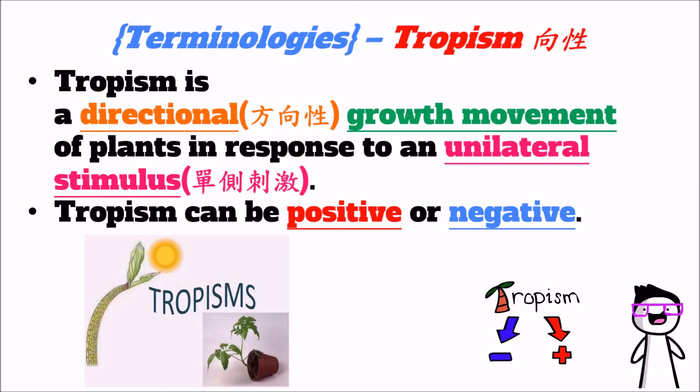The focus of this video is tropism. As I mentioned in the lesson, there are three elements in the definition of tropism. Firstly, tropism is directional. Secondly, tropism is a growth movement. Thirdly, tropism is in response to a unilateral stimulus. Tropism can be positive or negative. Positive tropism means the plant moves towards the unilateral stimulus, and negative tropism means the plant moves away from the unilateral stimulus.